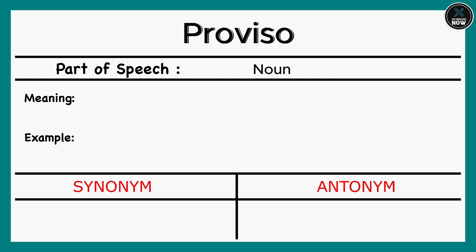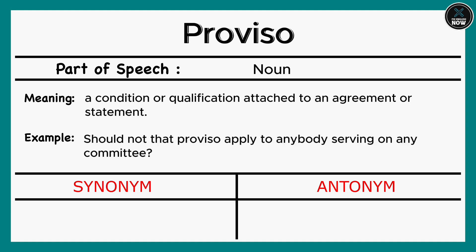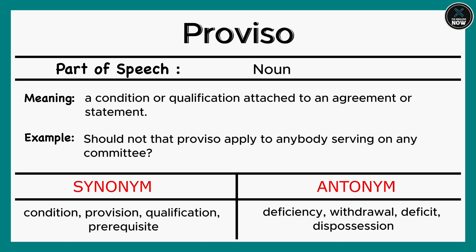Proviso: A condition or qualification attached to an agreement or statement. Example: Should not that proviso apply to anybody serving on any committee? Synonyms: Condition, Provision, Qualification, Prerequisite. Antonyms: Deficiency, Withdrawal, Deficit, Dispossession.